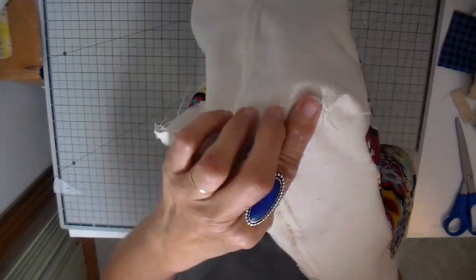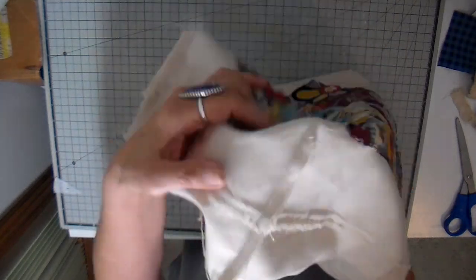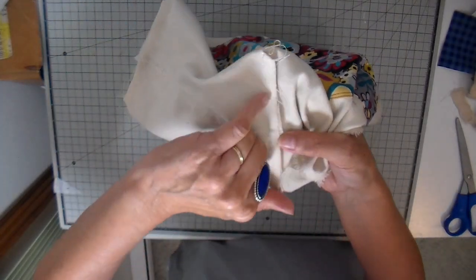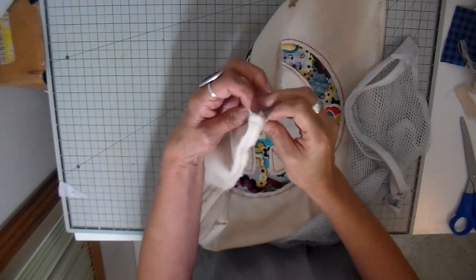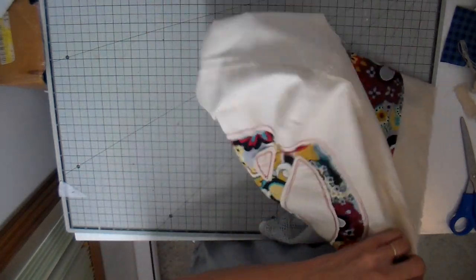Now for the box I'm just matching my seams and then sewing a half inch and then again top stitching that down. Got all that done.